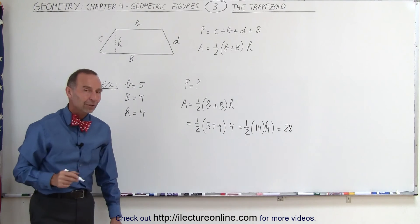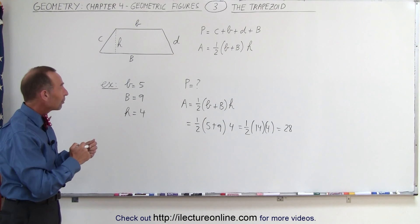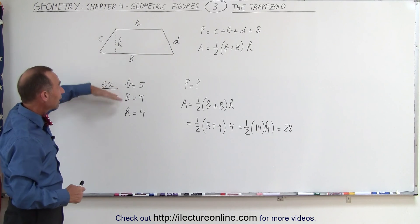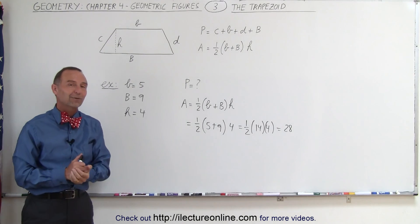So that would be the area of the trapezoid in square units, whatever the units are. That's how we deal with trapezoids—depending upon what they give us, there are certain things that we can and cannot calculate. And that's how it's done.